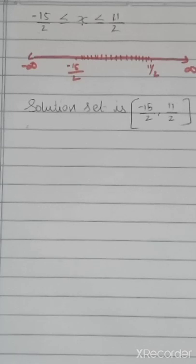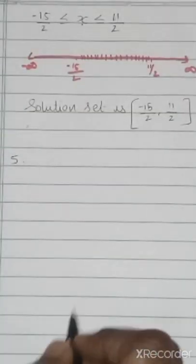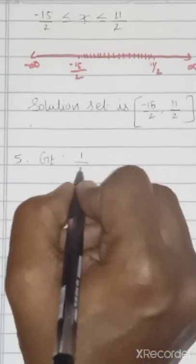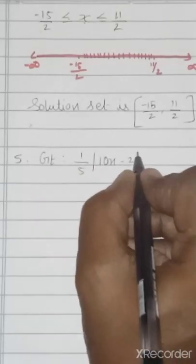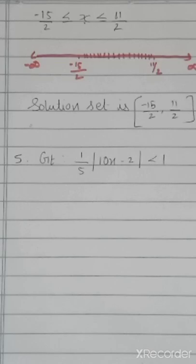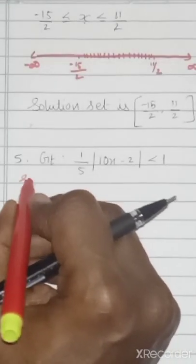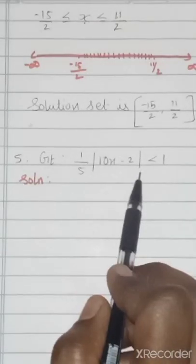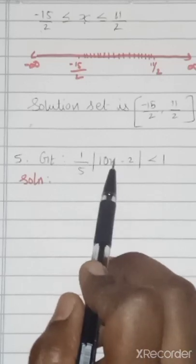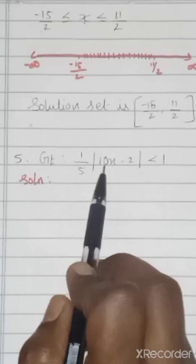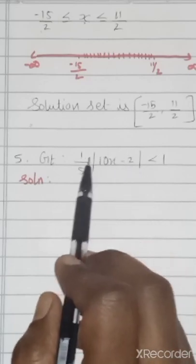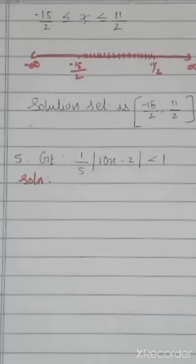Fifth question: (1/5)|10x − 2| < 1. If you know the concept, the problem will be easy. We have to find out the mod value and then find the x value. Keep mod in one side, take all elements to the other side, then keep x in one side. That is your final answer.